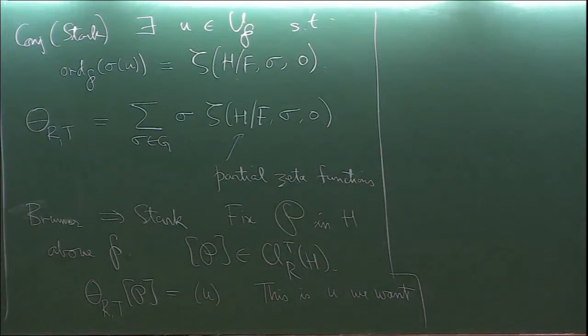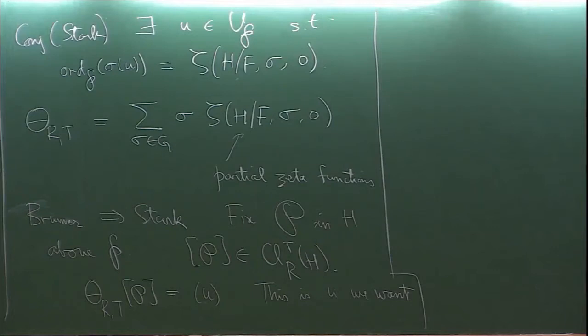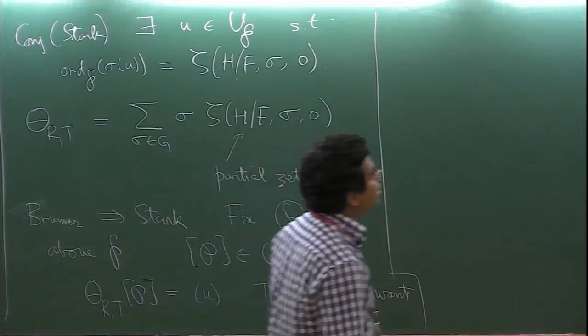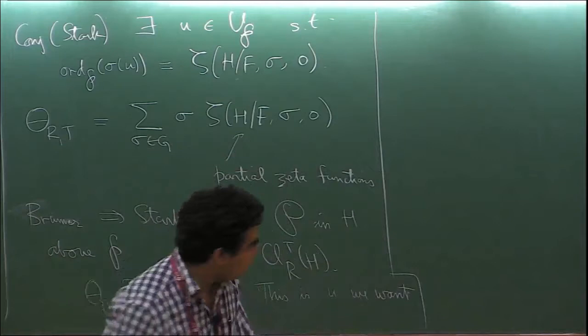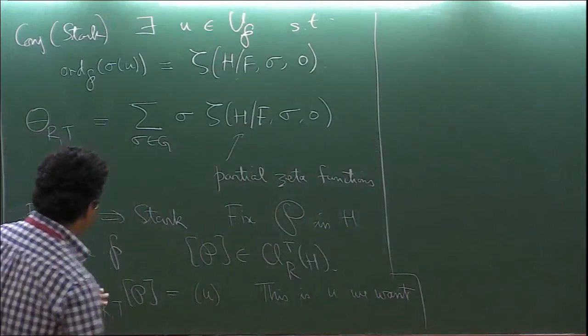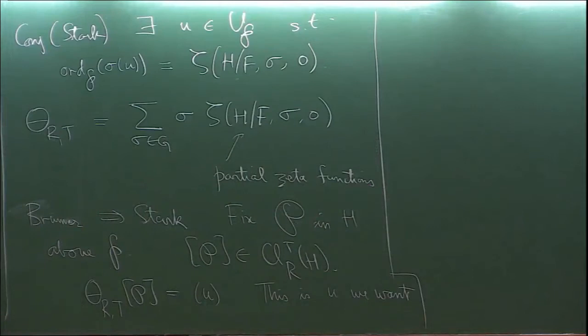There is very little role for R beyond being the minimal set — the set precisely containing the primes which ramify in H over F. If I take a bigger R, then I'd have to say something about its role in Stark's conjecture. This P does not have much to do with R or T, so it doesn't seem to have much to do with Brumer's conjecture directly.